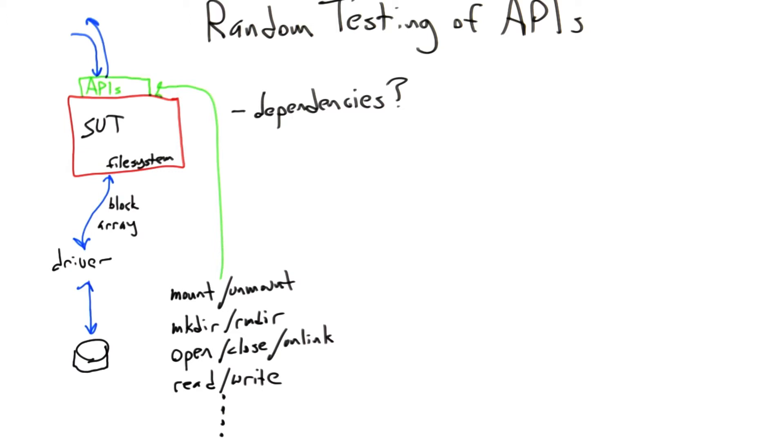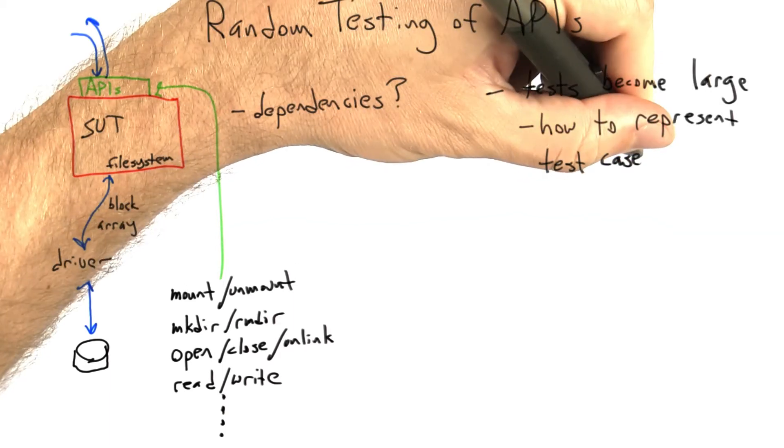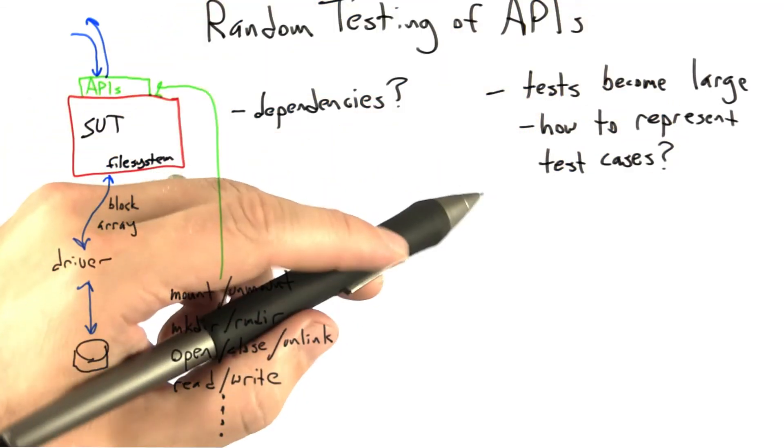The second issue that starts to come up as we perform random testing of APIs is that our tests, that is to say a sequence of file system operations in this example, are going to become quite large. And that's going to beg the question, how are those tests represented?